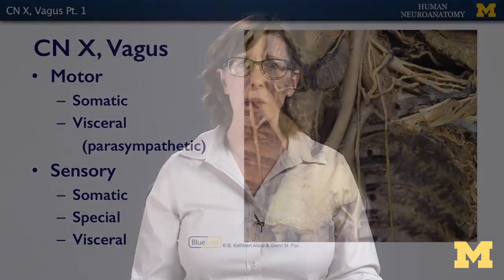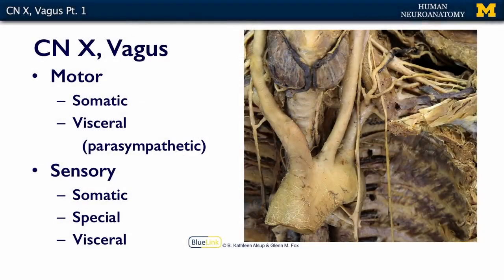There are multiple components to the vagus nerve. We have a motor component, which is both somatic and visceral — and in this case, parasympathetic. And there are multiple sensory modalities: a somatic sensory modality, a special sensory modality, and a visceral sensory modality.